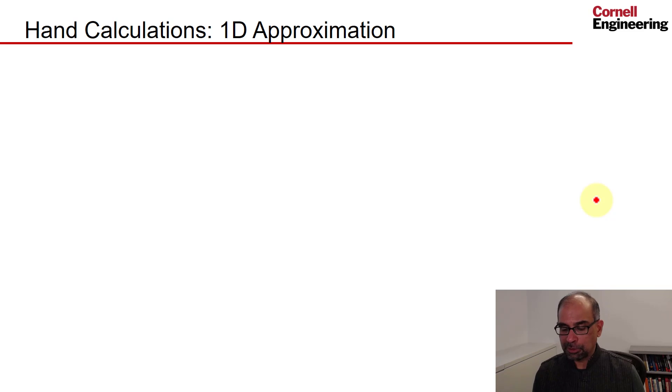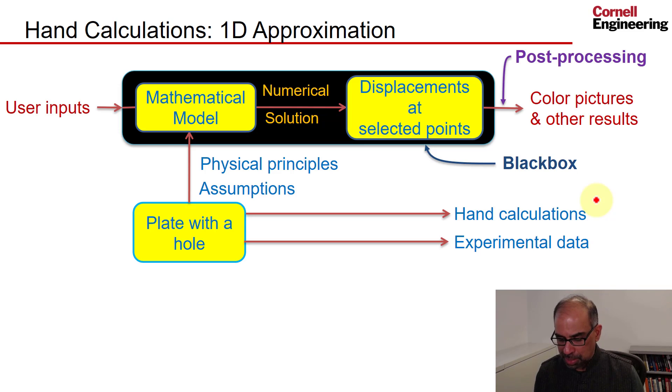The other set of hand calculations is based on a 1D approximation, which is much simpler. If I go back to my black box framework, the physical problem is 3D, and the mathematical model is 2D because we made the plane stress assumption. You can further simplify the mathematical model to 1D, and when you do that, you can do simple hand calculations by just ignoring the hole.